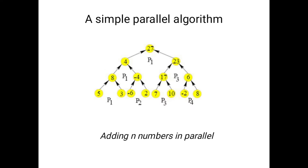Before going to that, I will show you the diagram here. We have a number of processes. In this diagram, we took 27 as the number and it is divided into two parts: 4 and 23. After that, 4 is divided again — here a particular number is divided into n numbers in parallel. So 4 is divided into 8 and minus 4, and 8 is divided into 5 and 3, and minus 4 is divided into minus 6 and 2. In that way, the entire numbers are divided into n numbers in parallel.